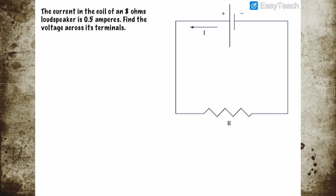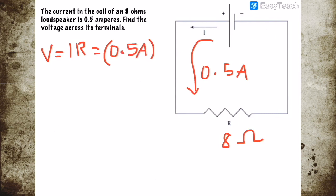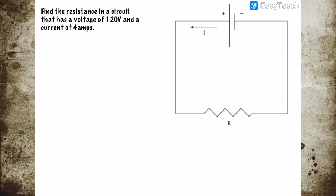Example two: the current in the coil of an 8-ohm loudspeaker is 0.5 ampere. Find the voltage across its terminals. The voltage equals I times R. Substituting the values, our current is 0.5 ampere times 8 ohms. Therefore the voltage is 4 volts.